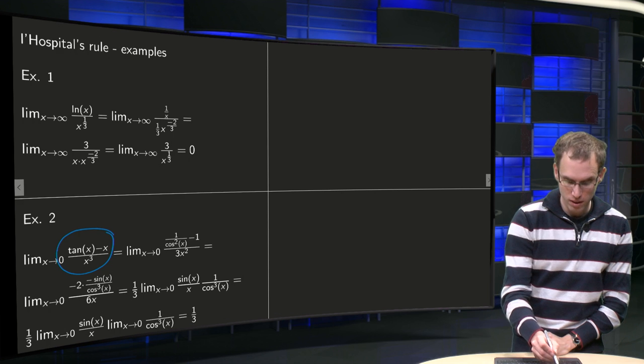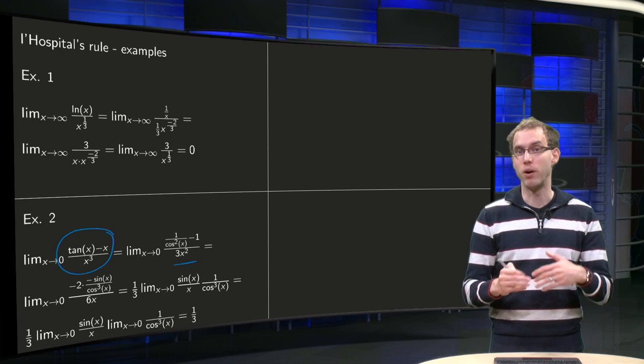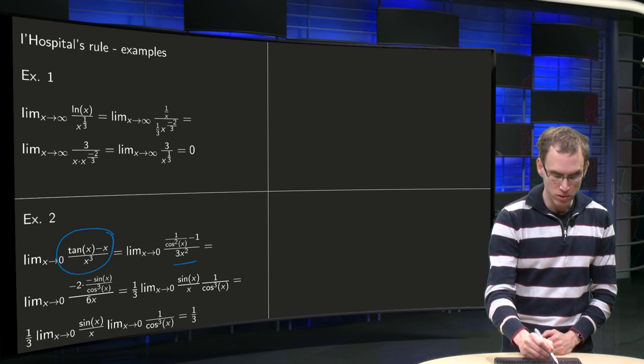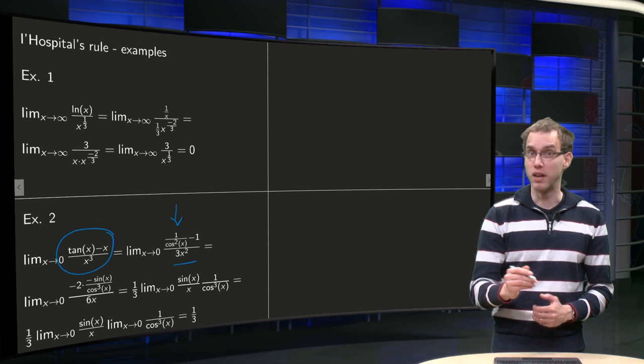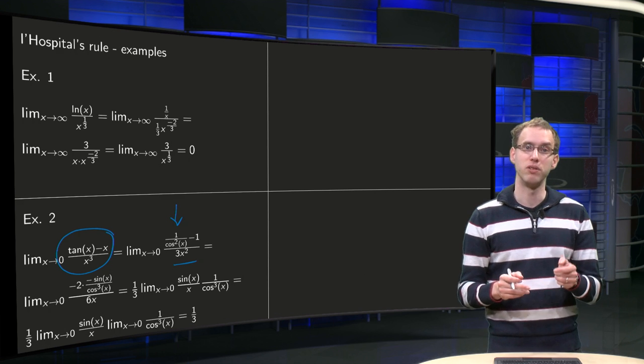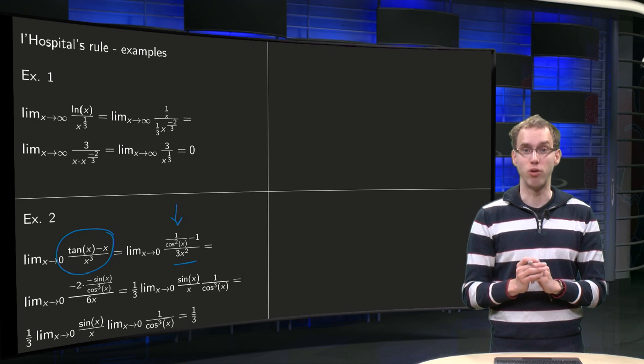So this one, g prime equals 3x squared, and f prime, well you have to know that the derivative of the tangent of x equals 1 over cosine squared of x minus x, derivative minus 1. Or if you don't know that, you write tangent of x equals sin(x) over cos(x), and you just apply the quotient rule.